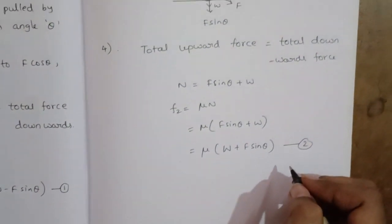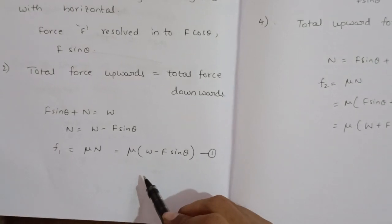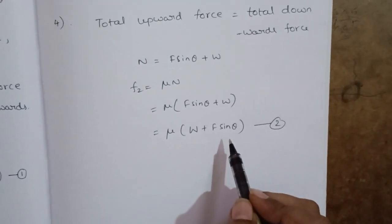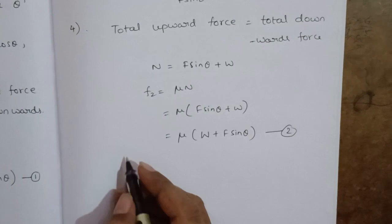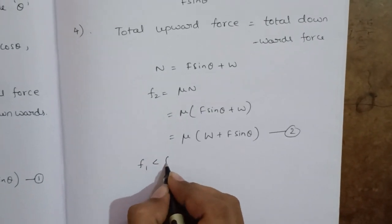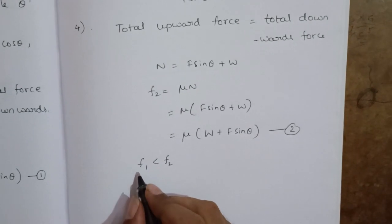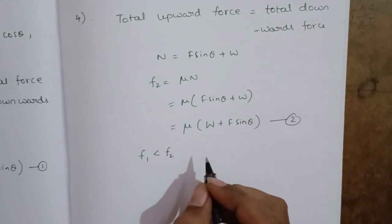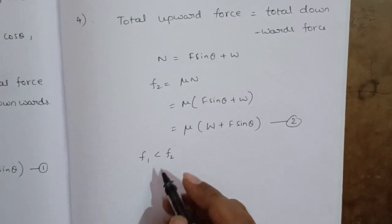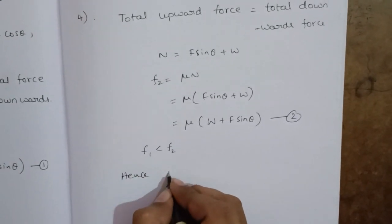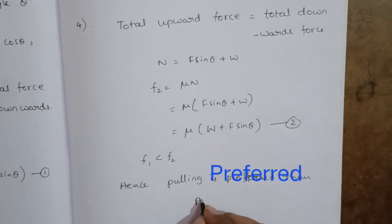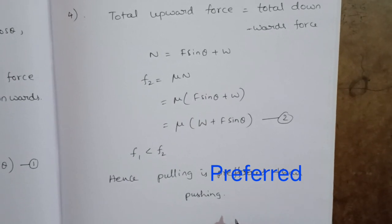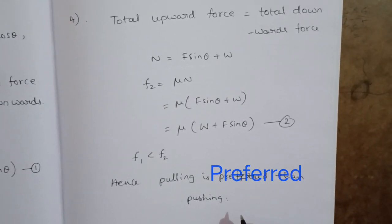Comparing equation 1 and equation 2: F1 = μ(W − F sin theta) and F2 = μ(W + F sin theta). So F1 is less than F2 — friction in pulling is less than in pushing. Since less friction means it is easier to move, pulling is preferred over pushing. Thank you for watching, please subscribe for more updates.